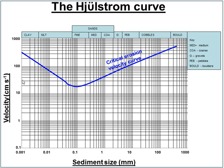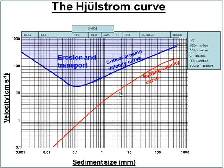From this point on — fine sands through to boulders — much greater velocities are required to pick up and move those sediments. Any velocities above that line and those sediments will be in transport. The next curve is the settling velocity curve, which shows the velocities required for sediments to actually be deposited — anything that falls below that line will be deposited in the river.